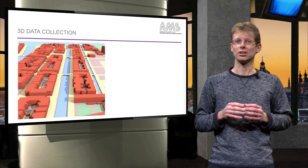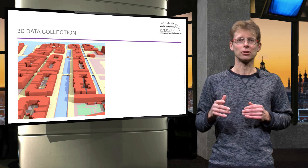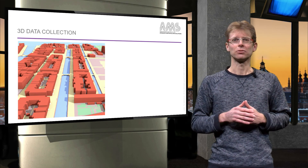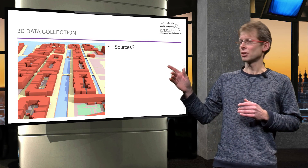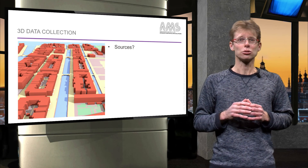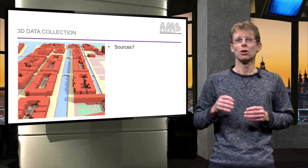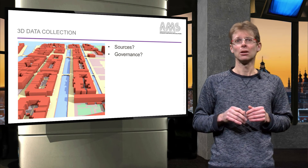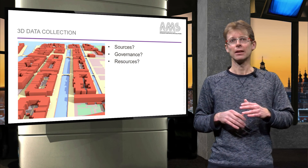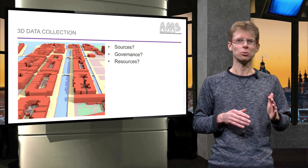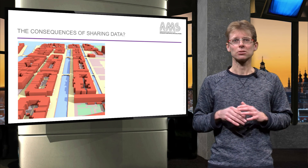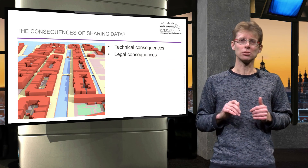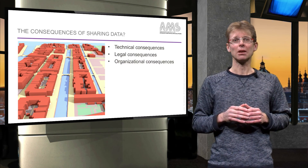Reaching agreement on data collection is especially difficult when there are several organizations already collecting identical data. This raises the following questions: What should be the primary source and who should stop collecting data? Who should cover the dataset and who should cover the data infrastructure? What resources need to be shared, how, when and with whom? Furthermore, what are the consequences of sharing data — not only the technical consequences, but also the legal consequences and the organizational and business consequences?